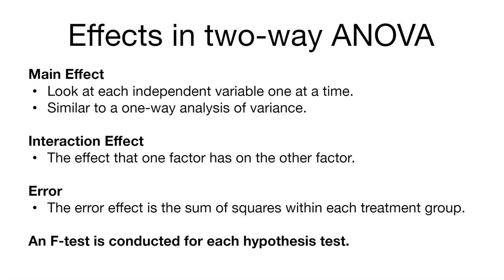We can also look at the effects of the two-way analysis of variance, which will help us interpret the two-way ANOVA table. For the main effect, you can look at each independent variable one at a time — planting date or variety — similar to the one-way analysis of variance. You can also look at the interaction effect, which is the effect that one factor has on the other. Additionally, the error effect is the sum of squares within each treatment group, which is one of the last values in the ANOVA table. There will always be some error in our models.